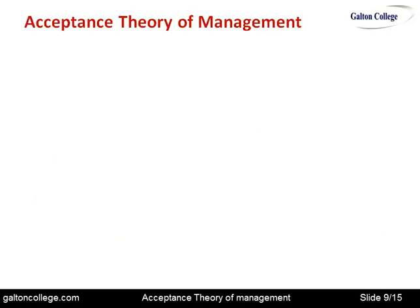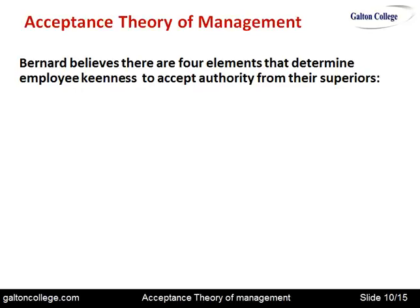Barnard believed there are four elements that determine employee keenness to accept authority from their superiors. First, employees understand communications — they understand what has been said. They're willing to accept instructions because the message is clear and they understand what's required. There is clarity about the communications, so they're willing to accept it because it's a clear instruction, not vague.